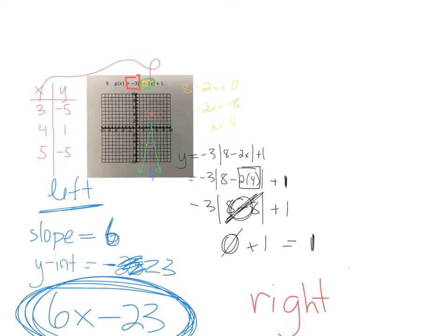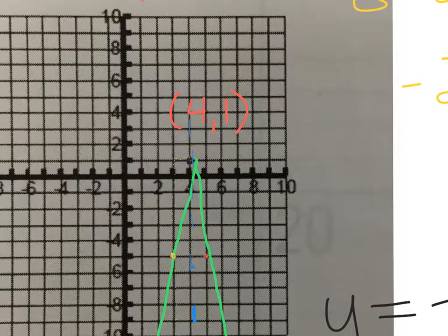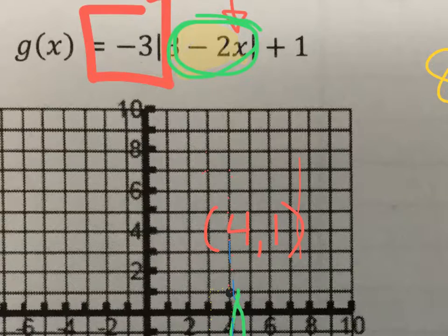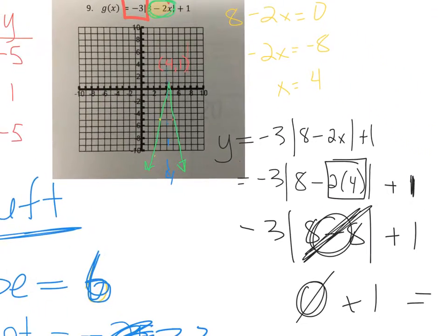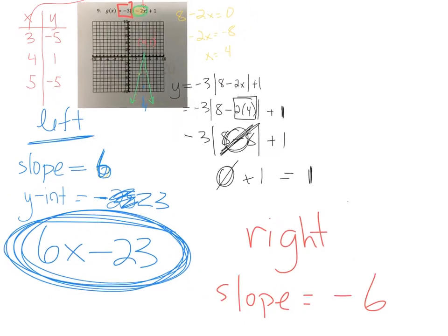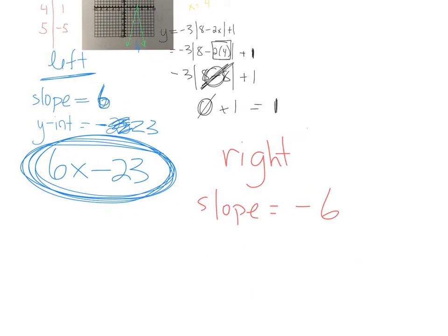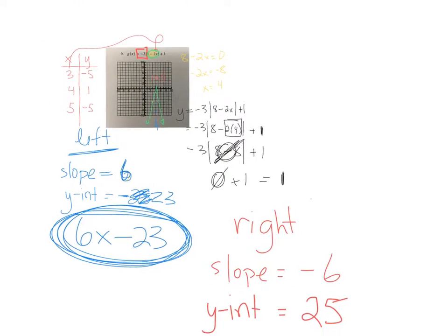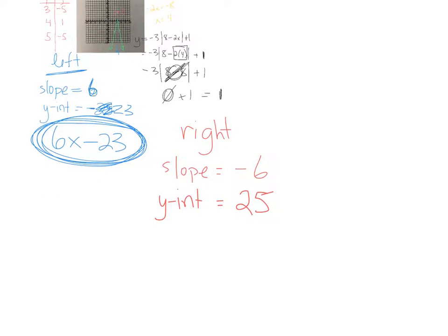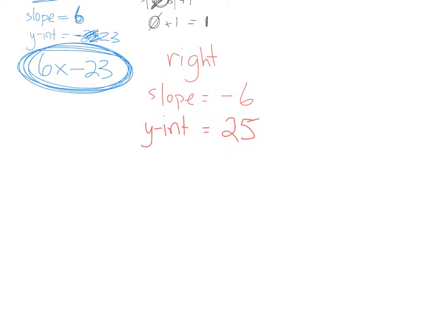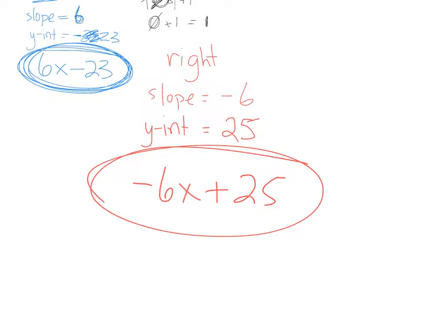And if I continue that slope, counting up 6 units and over 1, and then up 6 units and over 1, I believe, just like last time, I believe that I hit the y-axis at positive 25. So this equation, negative 6x plus 25. Okay, for the equation on the right.